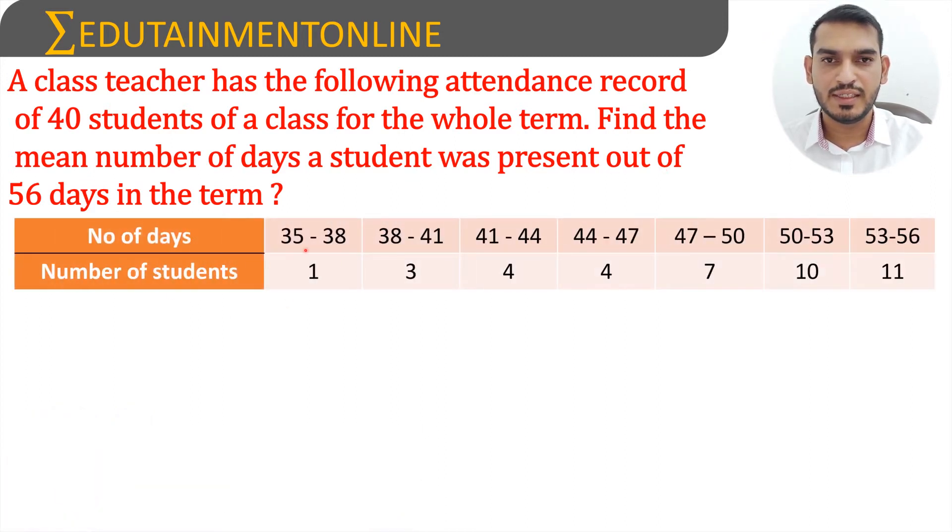So number of days are given as 35 to 38 for one student, 38 to 41 for three students, 41 to 44 for four students, 44 to 47 for four students, 47 to 50 for seven students, 50 to 53 for 10 students, and 53 to 56 for 11 students.